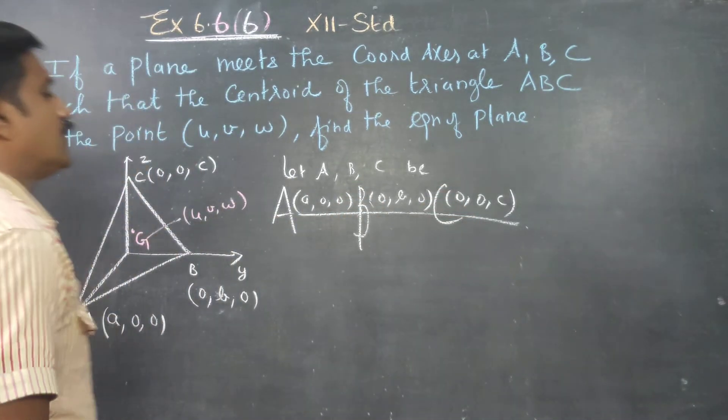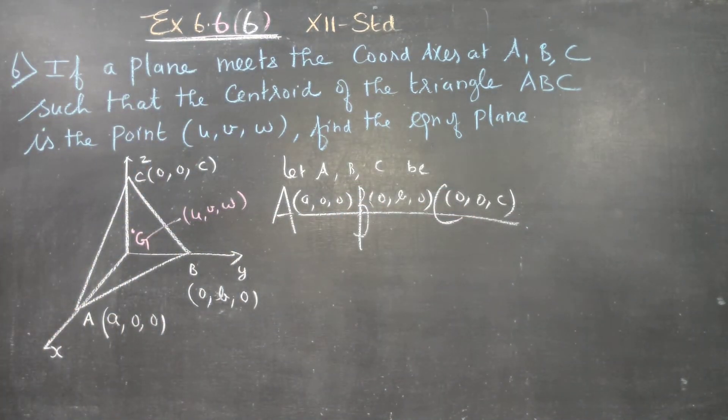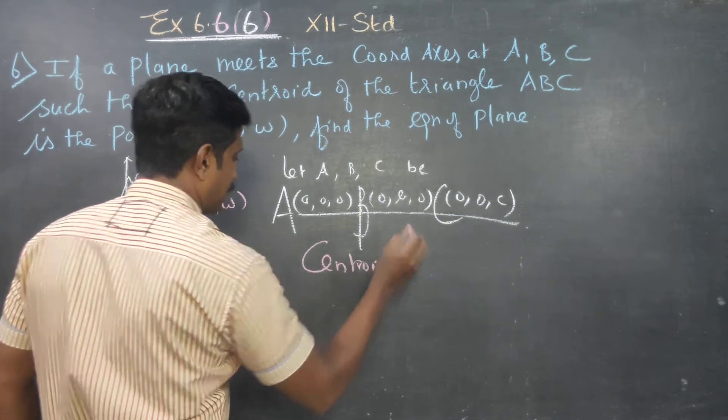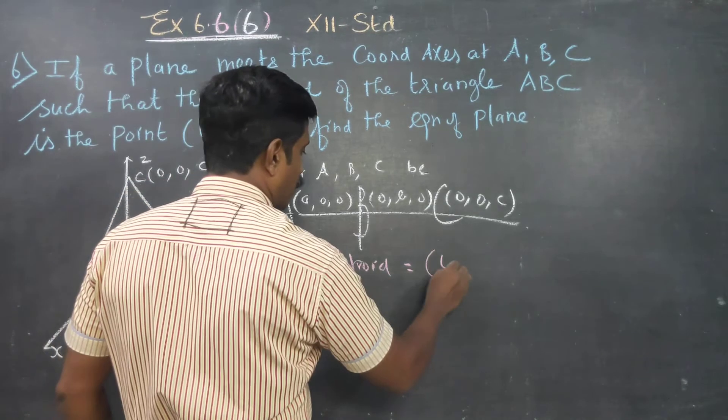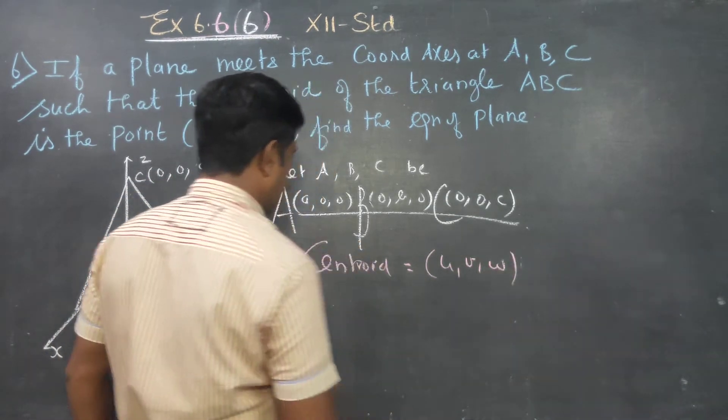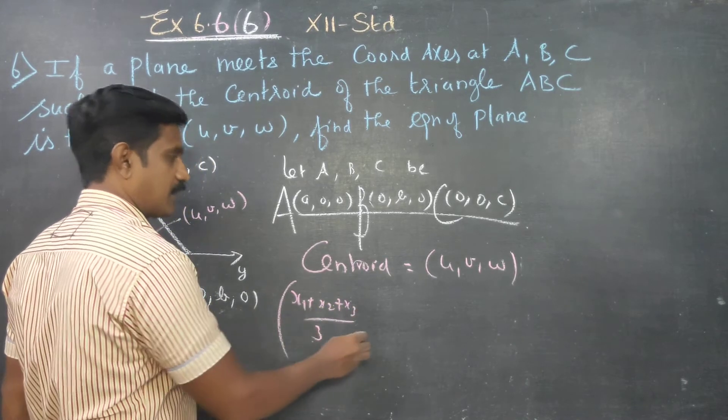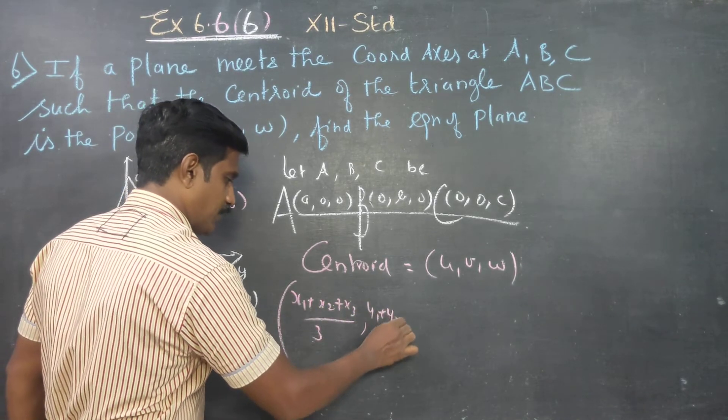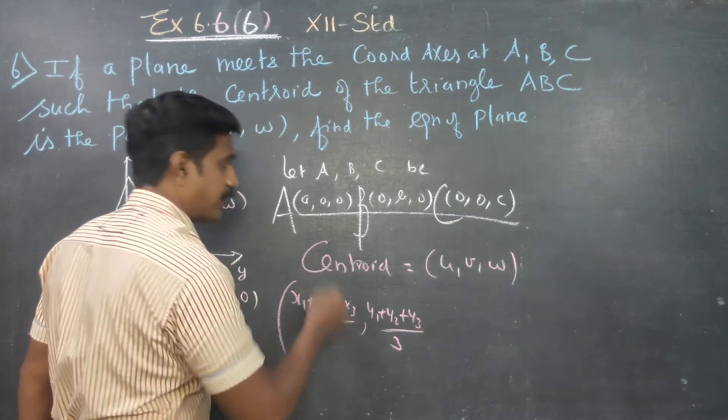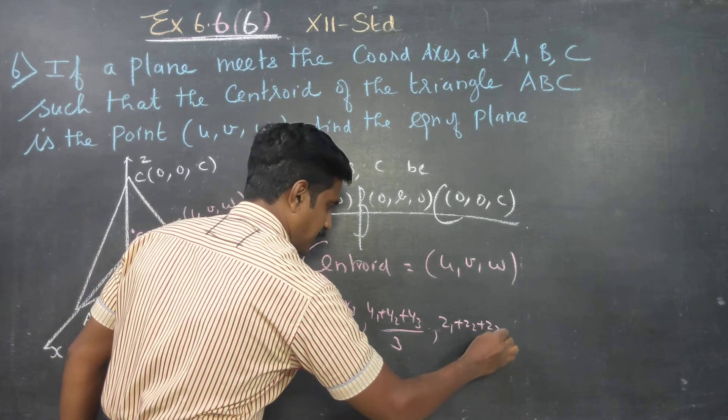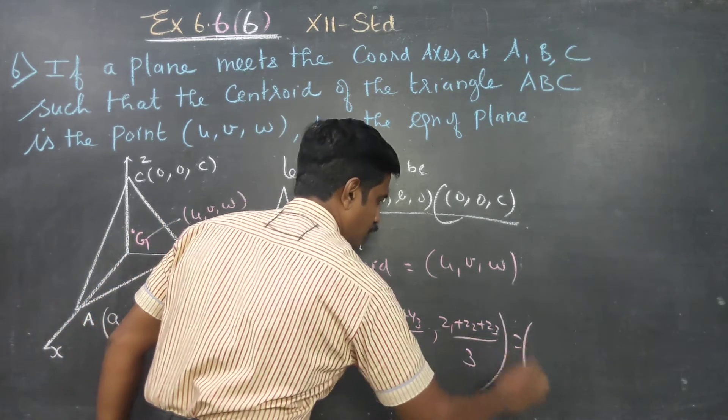The centroid formula is: (x1 + x2 + x3)/3, (y1 + y2 + y3)/3, (z1 + z2 + z3)/3 is equal to (u, v, w).